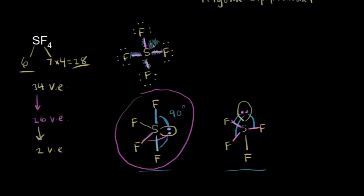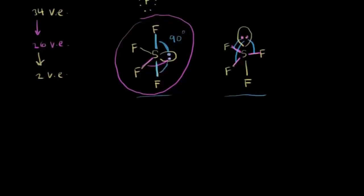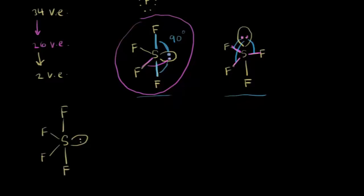Let's redraw the correct structure. Sulfur is in the center, with two equatorial fluorines in the plane, the lone pair equatorial, and one fluorine axial up and one axial down. For bond angles: the fluorine-sulfur-fluorine equatorial angle is ideally 120 degrees; an axial fluorine to an equatorial fluorine is 90 degrees; and between the two axial fluorines, the bond angle is 180 degrees.